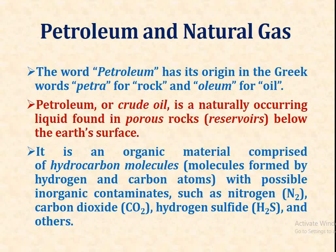The word petroleum has its origin in the Greek word — Petra for rock and oleum for oil. Petroleum or crude oil is a naturally appearing liquid found in porous rocks or in reservoirs below the earth's surface. It is an organic material comprised of hydrocarbon molecules, formed by hydrogen and carbon atoms, with possible inorganic contaminants such as nitrogen, carbon dioxide, hydrogen sulfide, and others.